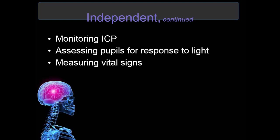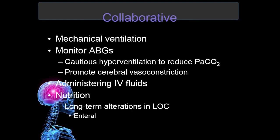Assessing pupils for response to light (PERLA), measuring vital signs, administering IV fluids as ordered, and using hyperventilation (through ventilation management) to reduce intracranial pressure. Mechanical ventilation may be needed; monitor ABGs. Use caution with hyperventilation to reduce PaCO2 levels and promote cerebral vasoconstriction to reduce cerebral edema. For patients with long-term alterations in level of consciousness — such as persistent vegetative state or locked-in syndrome — enteral feedings with a gastrostomy tube are the preferred method if they cannot take enough orally. Parenteral nutrition such as TPN is needed in some cases.